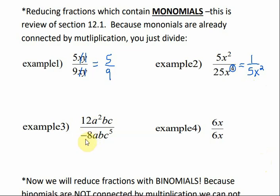In example number 3, 12 over 8 would reduce to 3 over 2, and it's still negative, so negative 3 over 2. For the a's, we have an a squared on top and an a on the bottom. When I subtract, I just have one a on top. For our b's, they would just cancel. And then for the c's, remember, there's an understood 1 here, so 5 minus 1 is 4. The biggest one's on the bottom, so c to the 4th would go on the bottom.